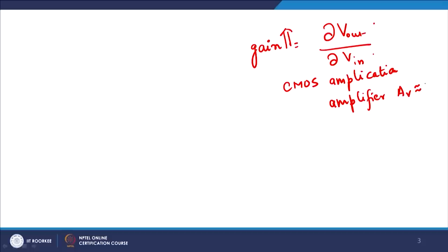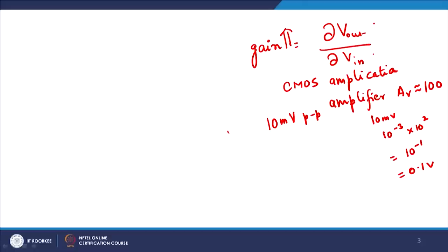For example, if the voltage gain AV is 100 and you give an input peak-to-peak of 10 millivolts, then the output will be 0.1 volts. This means a 10 mV peak-to-peak input results in a Vout of approximately 0.1 V for the CMOS — which means you can use CMOS both for analog design as an amplifier, and for digital design.